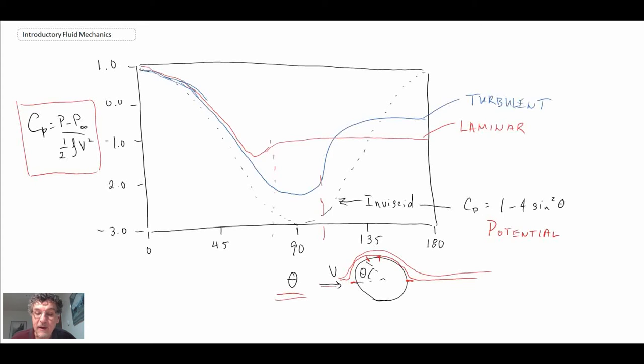The main point is you can see that when you have a turbulent boundary layer, it more closely approximates the inviscid characteristic where you have no separation on the cylinder.